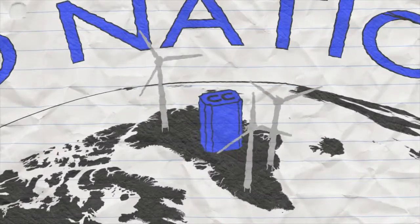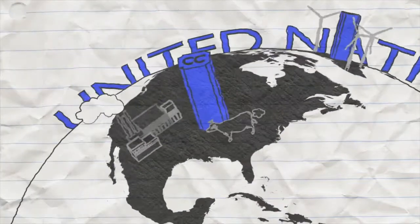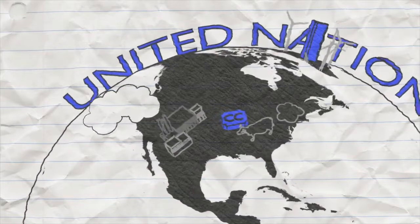Some countries can reduce their carbon emissions to a level where they have excess carbon credits. Other countries still use too much carbon dioxide and either must pay a fine or buy more carbon credits.